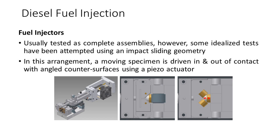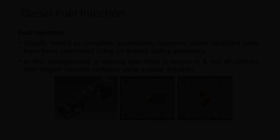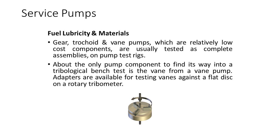Fuel injectors are usually tested as complete assemblies. However, some idealised tests have been attempted using an impact-sliding geometry, in which a moving specimen is driven in and out of contact with angled counter surfaces using a piezo actuator. Gear, trochoid and vane pumps are relatively low-cost components and they are usually tested as complete assemblies on pump test rigs. About the only pump component to find its way into a tribological bench test is the vane from a vane pump, with adapters available for testing vanes against a flat disc on a rotary tribometer.